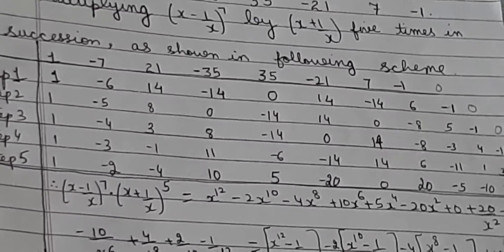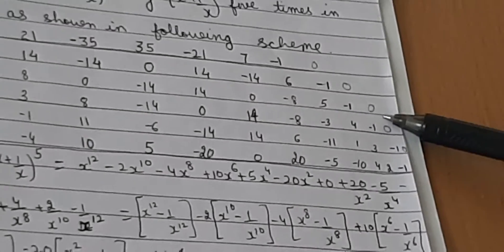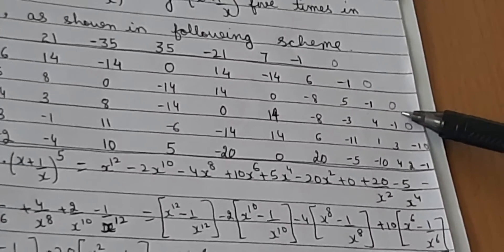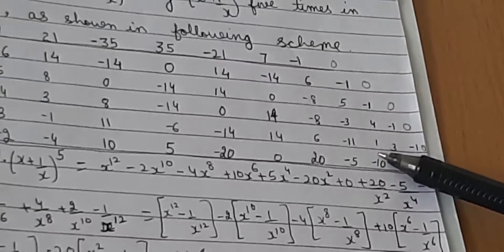Each step adds the next term to its previous term. Remember to place a 0 at the end and add it to the last term in each step. Similarly complete step 3, step 4, and step 5. Then write out the coefficients from step 5.